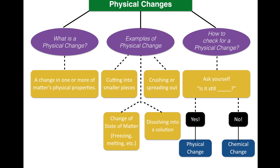Let's wrap up this lesson. A physical change is a change in one or more of matter's physical properties. We can cut into smaller pieces, crush it or spread it out, change its state of matter, or dissolve it into a solution — those are just some of many different examples. And the question you ask yourself if you're ever confused about whether it's a physical change is: 'Is it still blank?' — is it still that substance you were looking at before the change? If yes, it's a physical change. If it's a different substance, then it's a chemical change, and that's what we'll talk about in our next lesson. Hope you enjoyed it and thanks for watching.